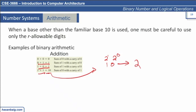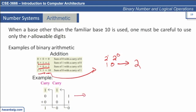Here is an example. This value in decimal is three, and this is simply one, so the answer should be four. When you add one plus one, the answer is zero and the carry is placed in the next position. Then again, one plus one plus zero is again zero with a carry of one.